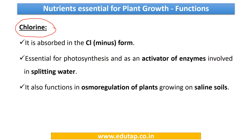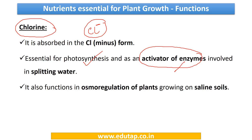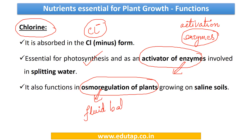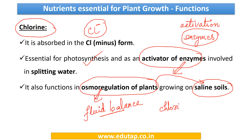Now we come to chlorine. It is absorbed in the Cl⁻ form. It is essential for photosynthesis and acts as an activator of enzymes involved in splitting water. Chlorine also functions in osmoregulation of plants — that is, maintaining the fluid balance inside the cells. For plants growing on saline soils (those soils that have higher quantities of salts), chlorine is very much required for osmoregulation.